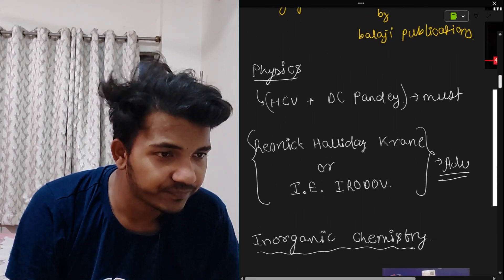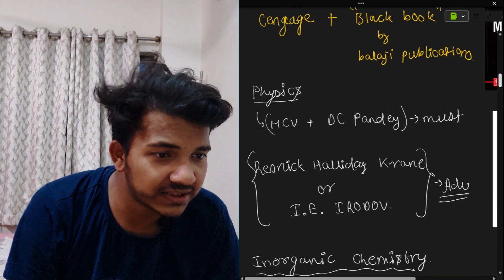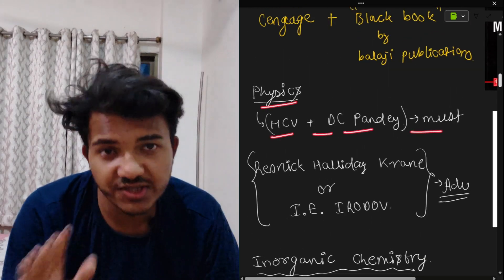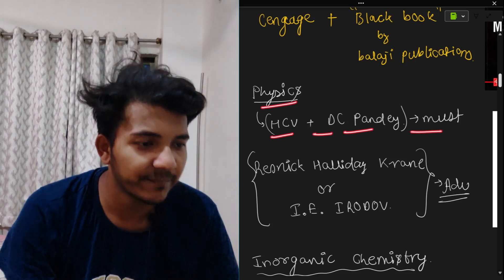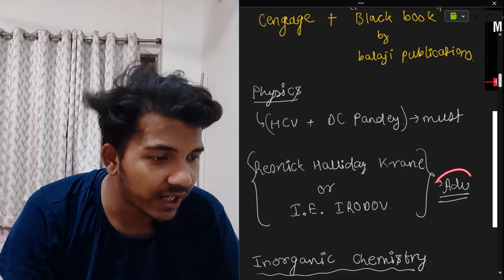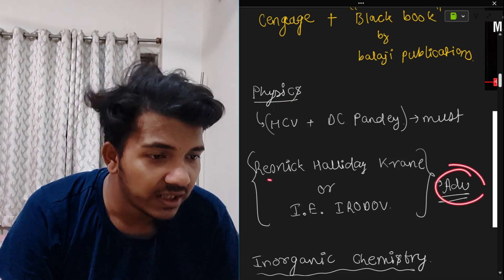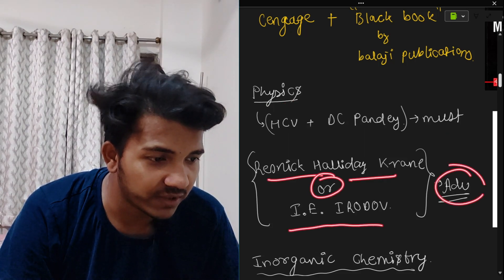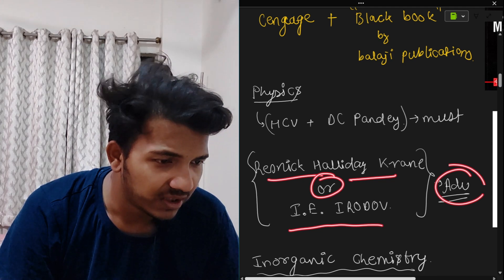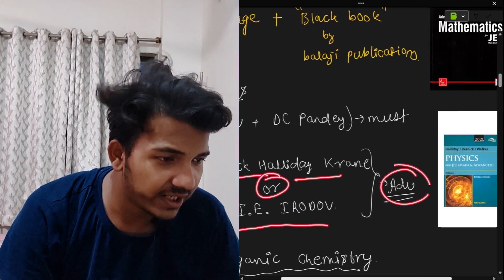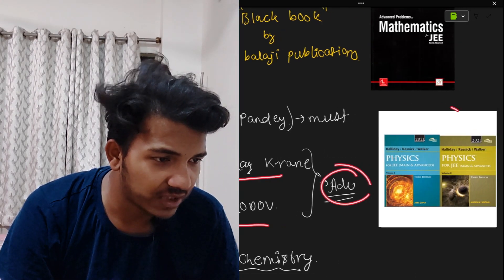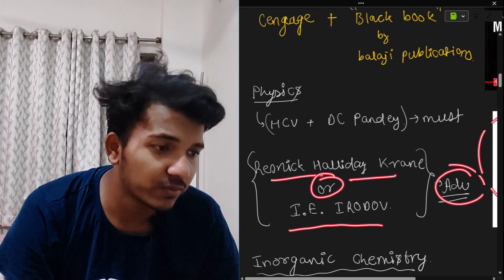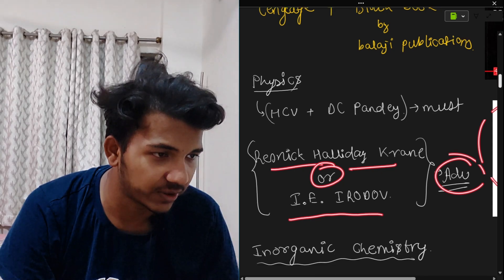Next, for Physics: HC Verma plus DC Pandey is a must-have. Additionally, for advanced level, you can take Resnick Halliday Krane or IE Irodov. Resnick Halliday comes in two volumes — it is a thick book — and you can solve it for advanced preparation.